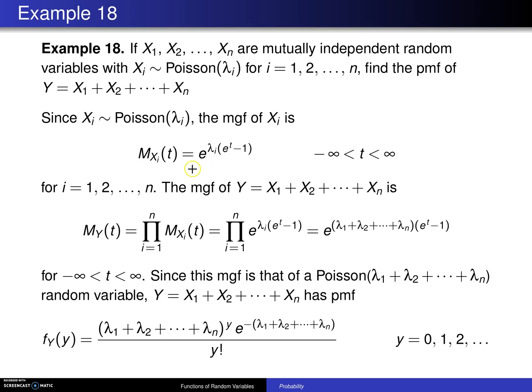So that is a known moment generating function, and that means the moment generating function of the sum is m sub y of t will be the product of the moment generating functions of the individual x sub i values. You simply copy in this moment generating function right down into here.